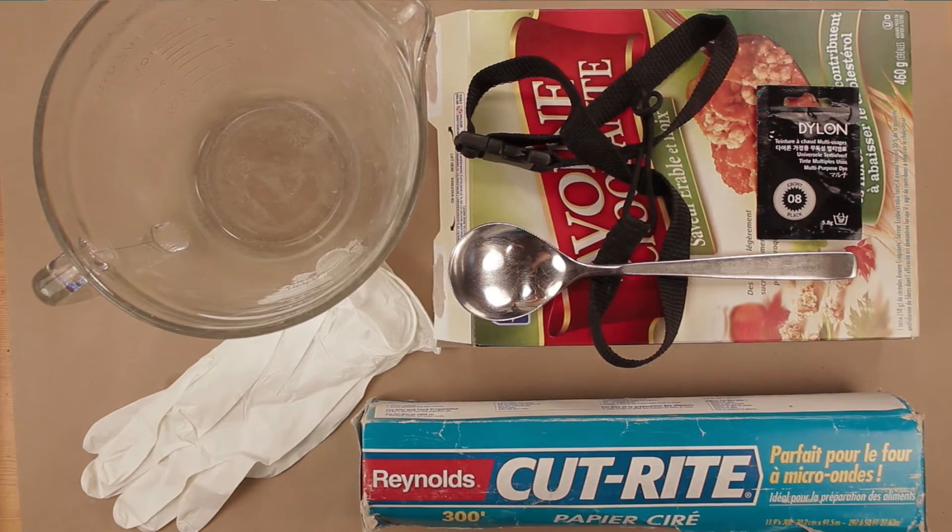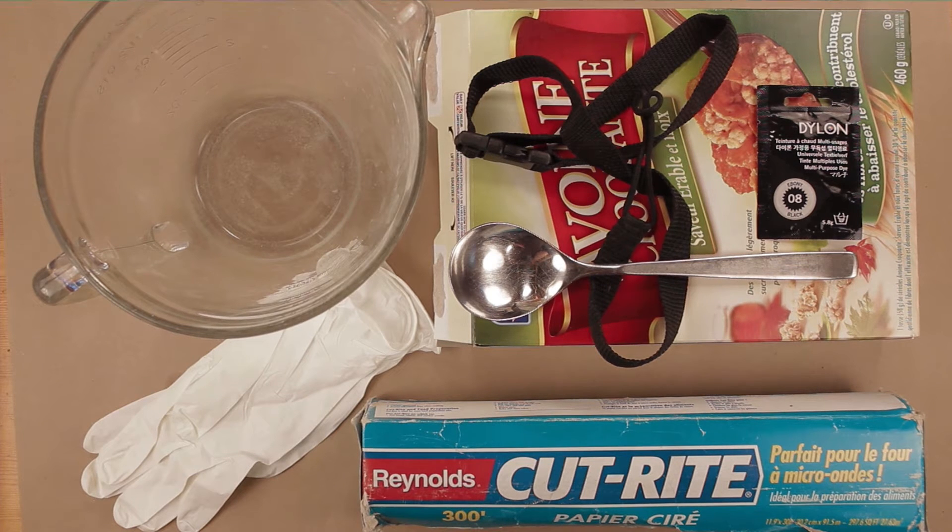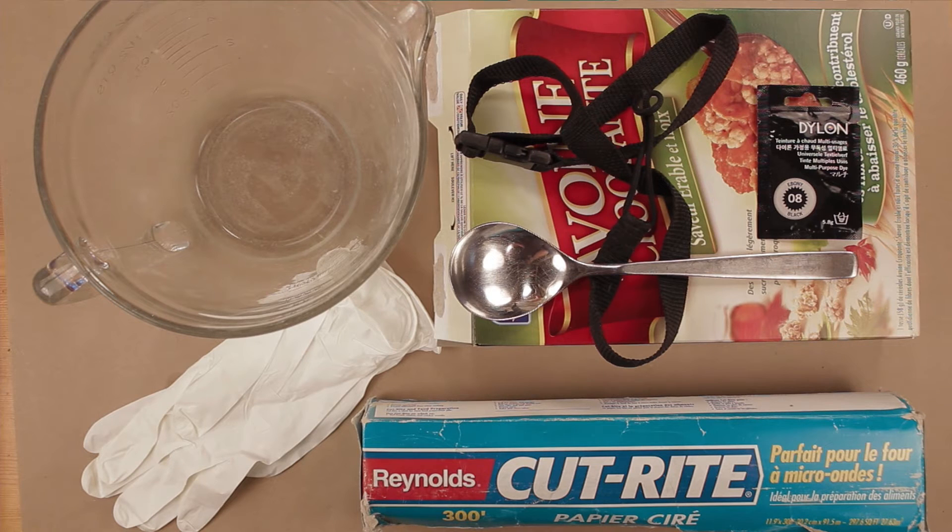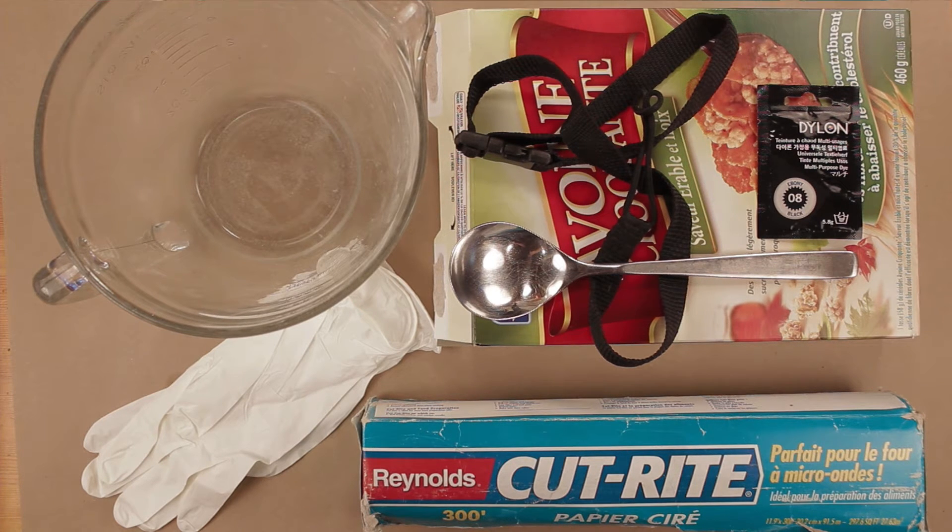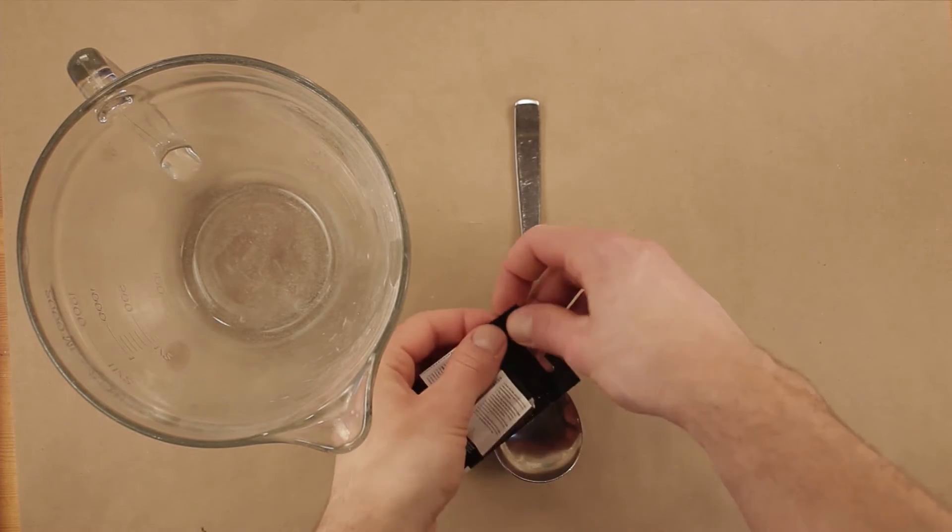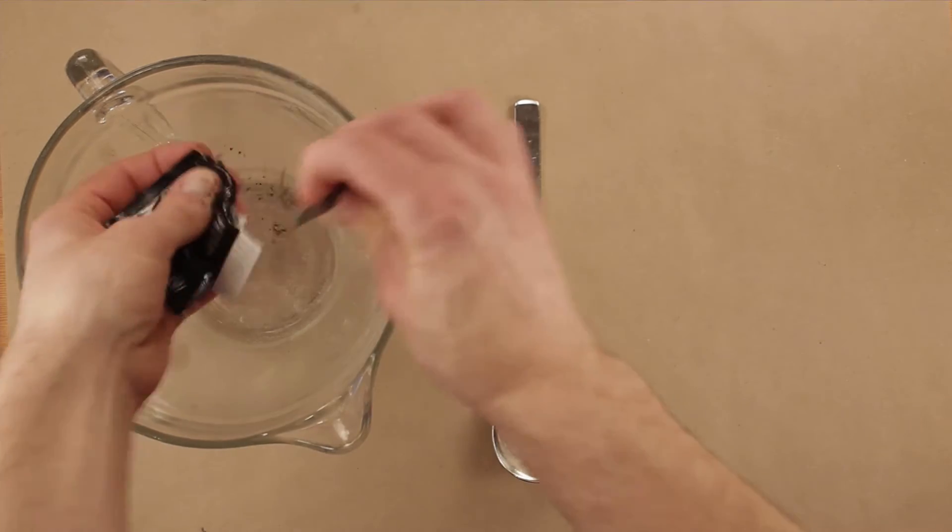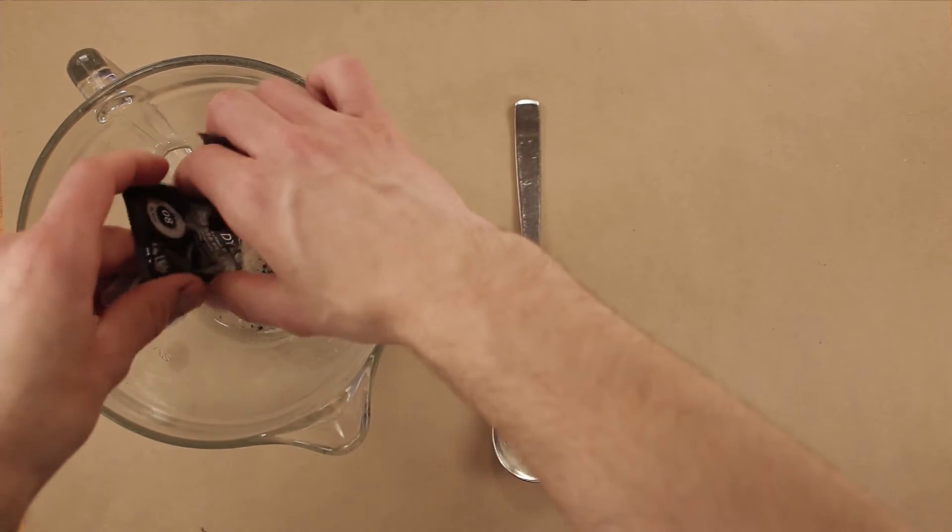You'll also need some kind of dye. I'm using black clothing dye, but you can also get specialized concrete dyes. I also suggest gloves as it can get quite messy. You'll also need a mold. I'll be using an old cereal box. First, we'll mix the dye with boiling water in the proportions on the package. We won't need the salt. Do this in advance so the water isn't too hot when you're making the concrete.